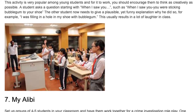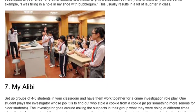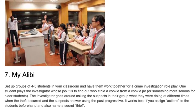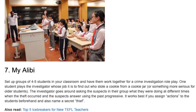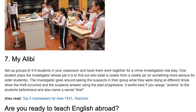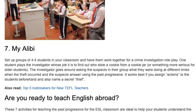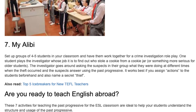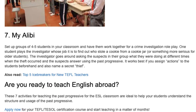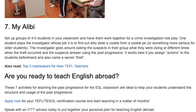7. My Alibi. Set up groups of four to five students to work together for a crime investigation role play. One student plays the investigator whose job it is to find out who stole a cookie from a cookie jar — or something more serious for older students. The investigator asks the suspects what they were doing at different times when the theft occurred, and the suspects answer using the past progressive. It works best if you assign actions to students beforehand and also name a secret thief.